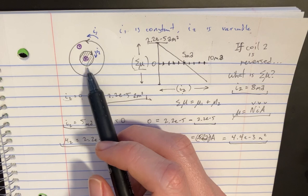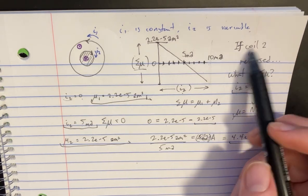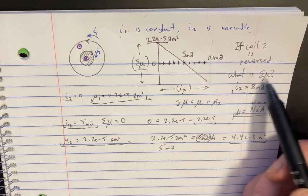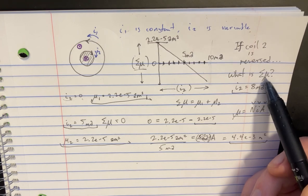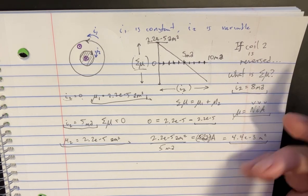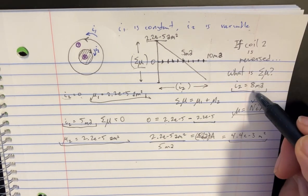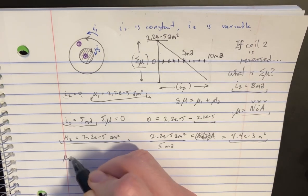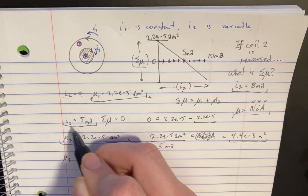Now that we figured that out, let's take a look at the next step. If coil two was reversed, what would be the net M when I2 is at eight? So we're going to try to establish what is M2 when I2 is eight.